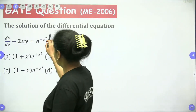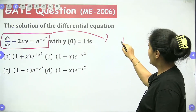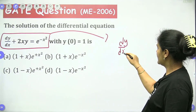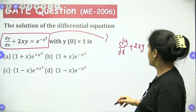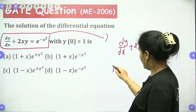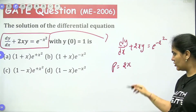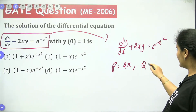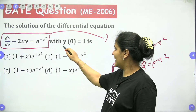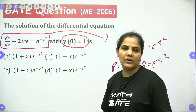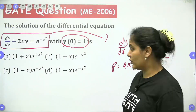This question has been asked in 2006: dy/dx plus 2xy equals e to the power minus x squared. So we write p equals 2x and q equals e to the power minus x squared. We have to find the solution given the initial condition x equals 0, y equals 1.